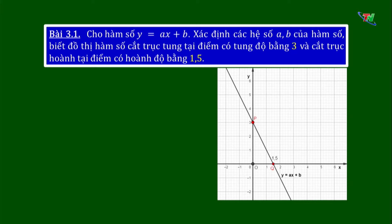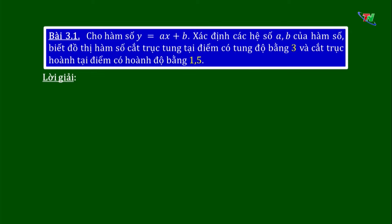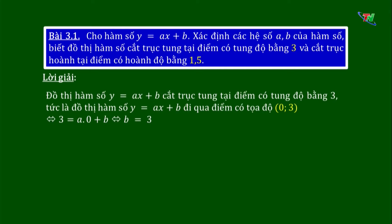Điểm P nằm trên trục tung có hoành độ bằng 0, nên tọa độ của điểm P là (0, 3). Điểm Q nằm trên trục hoành có hoành độ là 1,5, tung độ bằng 0, nên tọa độ điểm Q là (1,5; 0). Đồ thị hàm số Y bằng Ax cộng B cắt trục tung tại điểm có tung độ bằng 3, tức là đồ thị đi qua điểm (0, 3). Thay X bằng 0, Y bằng 3 vào hàm số ta được 3 bằng A nhân 0 cộng B, biến đổi tương đương ta được B bằng 3.